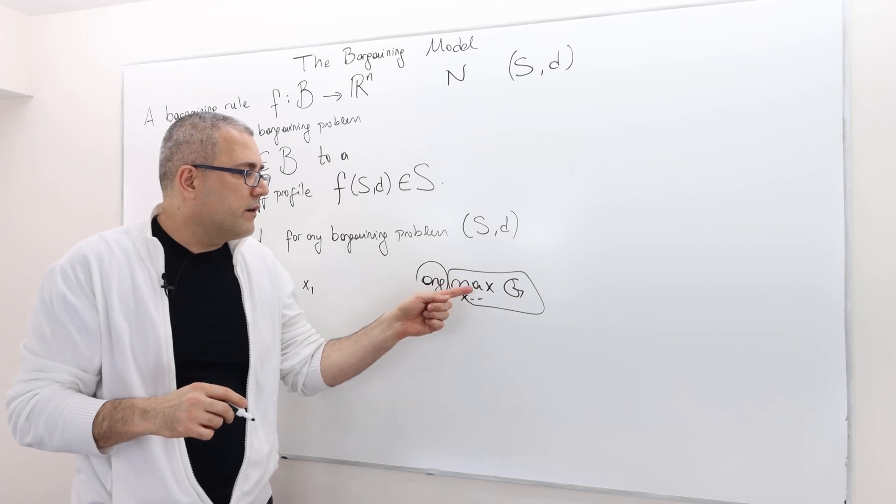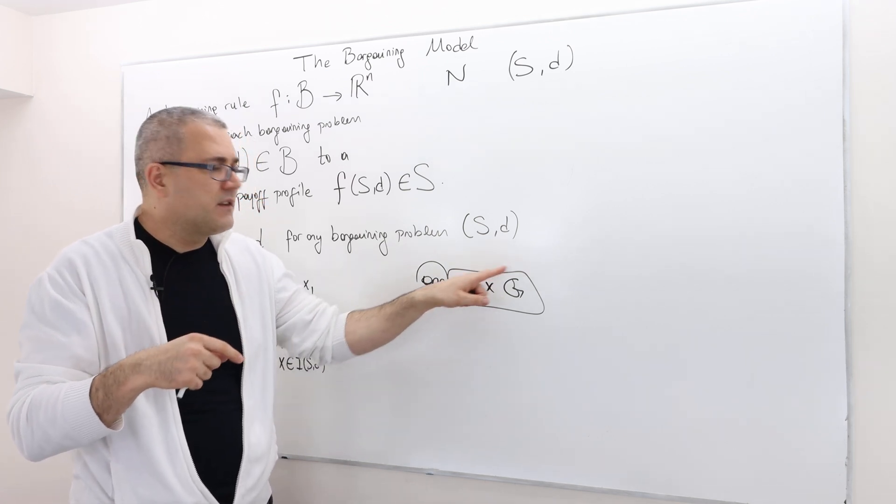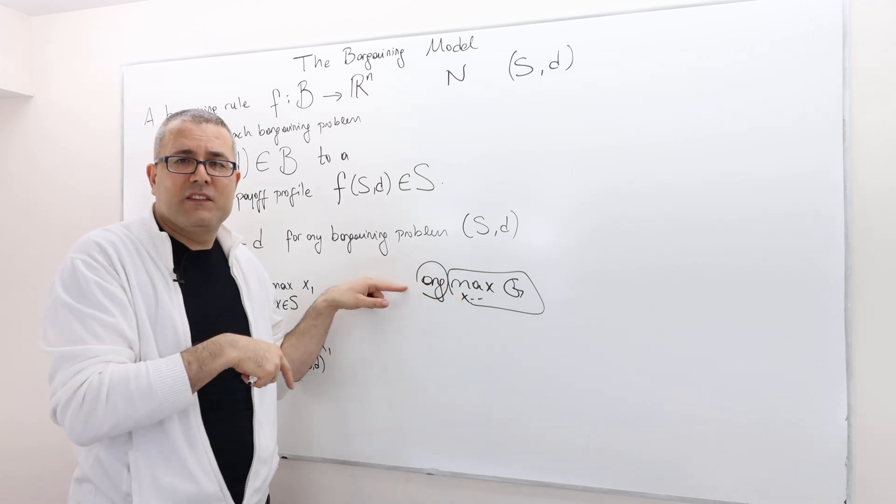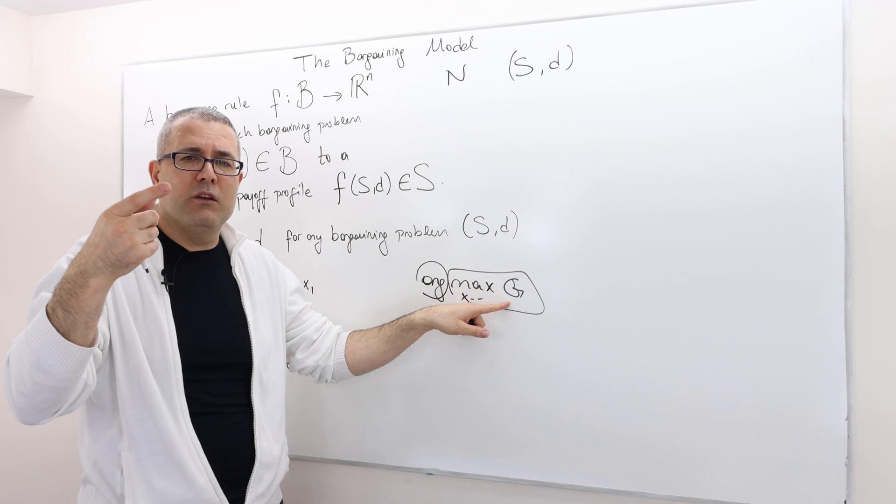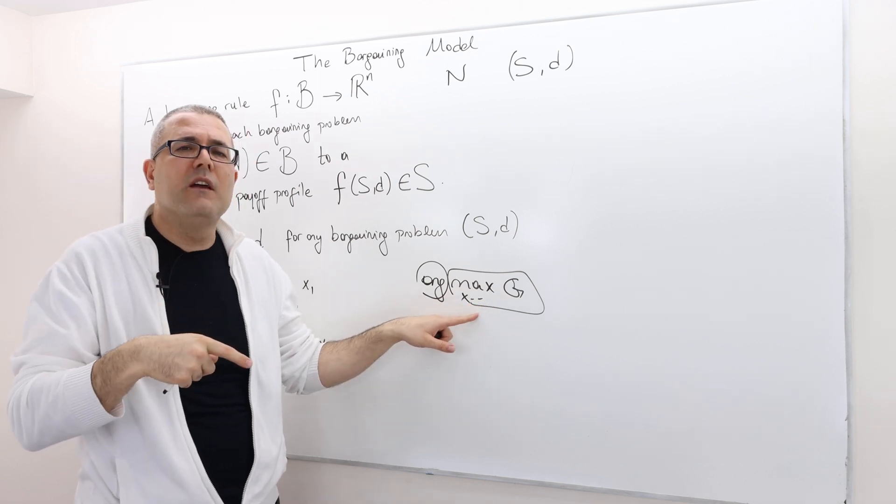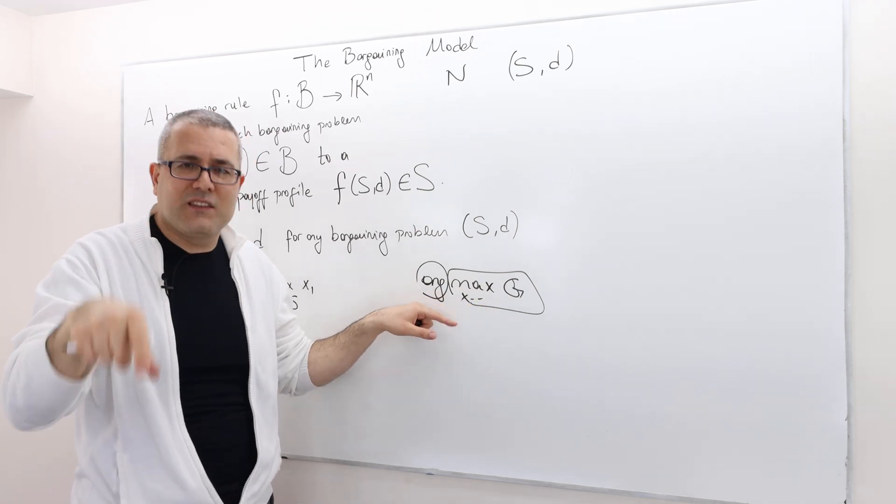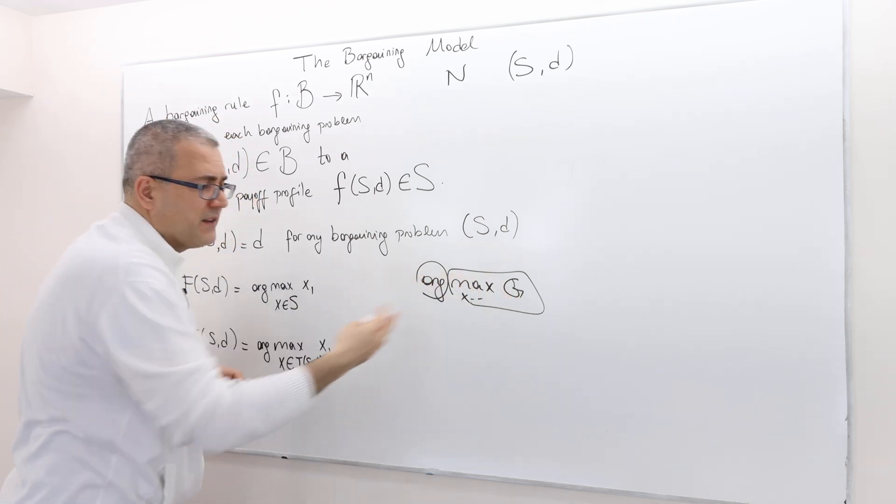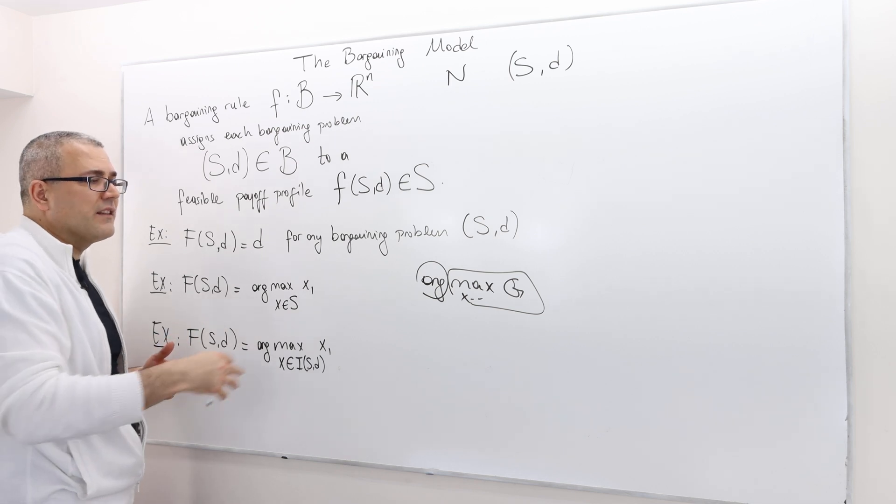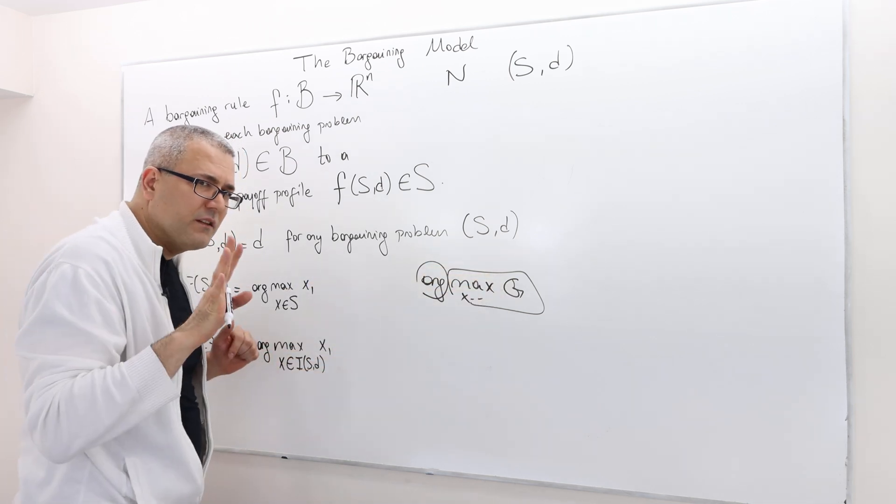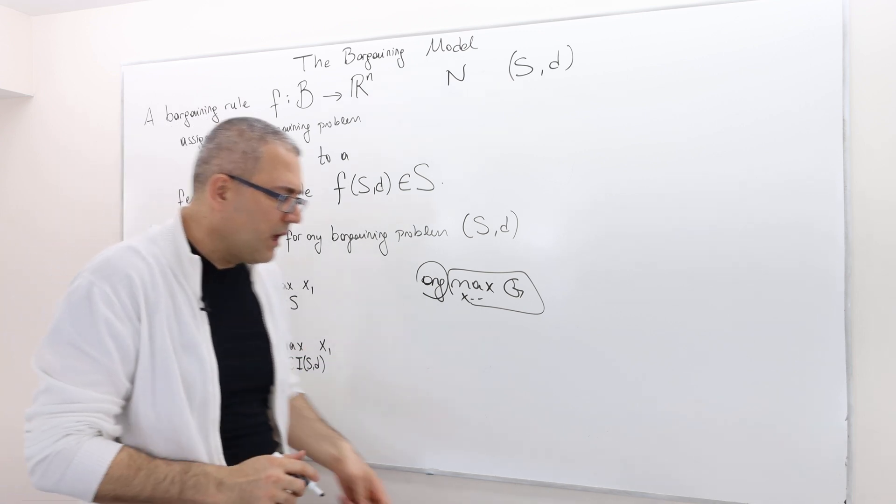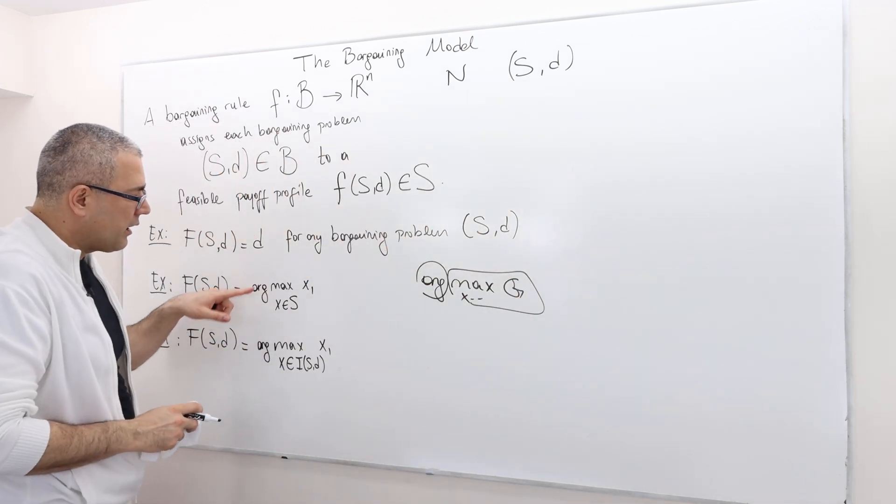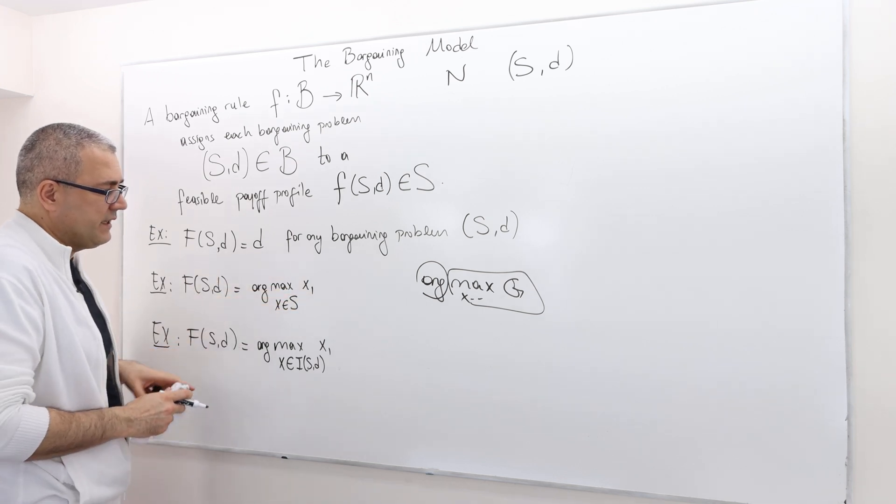It basically says, you need to maximize some function by choosing whatever. And then arg is the x itself, whatever x maximizes this function. The argument is the x itself. We don't really care about the value of g at that point. We care about the x itself. So it is the argument that maximizes the g is what we are after, not the value of g itself.